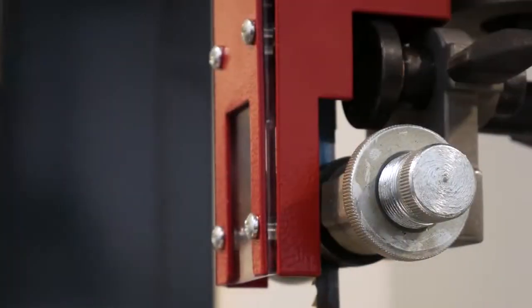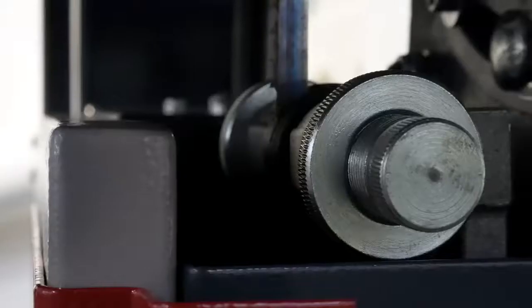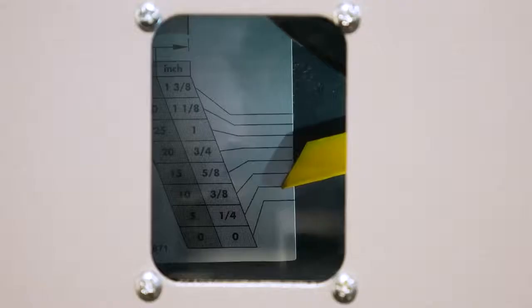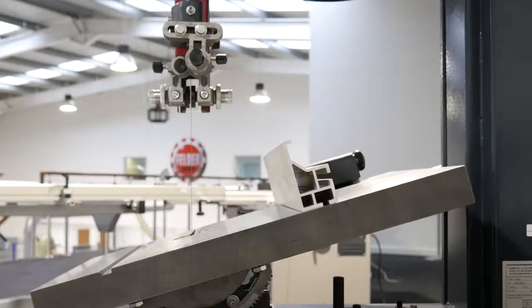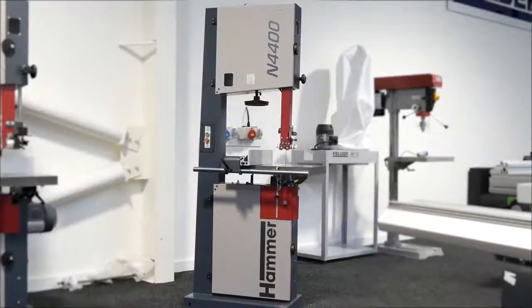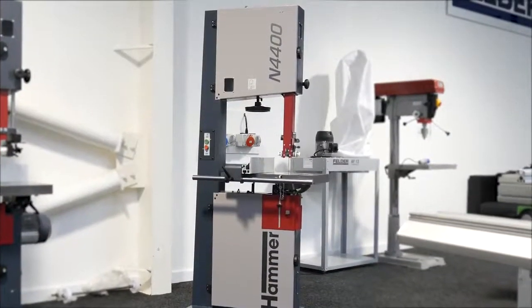Standard features include saw blade guides above and below the table, saw blade tension indicator, tilting machine table, and many others to make a comprehensive package at a great price.